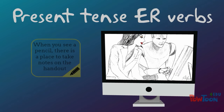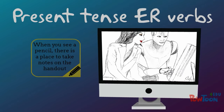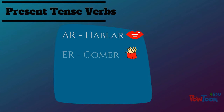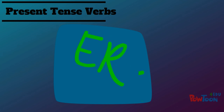Hola! Let's talk about ER verbs. In Spanish, we have three types of verbs: AR verbs like hablar, ER verbs like comer, and IR verbs like vivir. They are all pretty similar in terms of conjugating, but let's focus on the ER verbs.